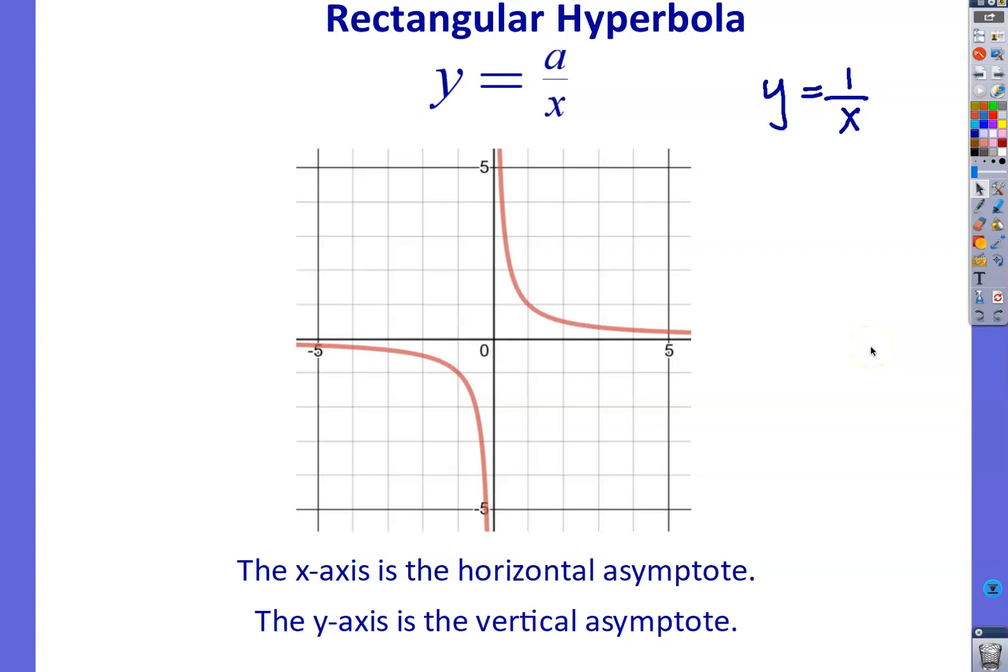Hello students. What we're going to do in this video is have a look at first the asymptotes for the equation y equals a on x. And then we're also going to have a look at the transformations of this particular formula.